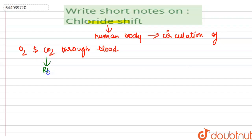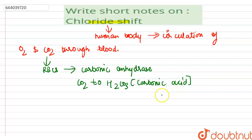Then the enzyme carbonic anhydrase converts the CO2 to H2CO3, that is carbonic acid. This carbonic acid breaks to give bicarbonate ion and hydrogen ion.